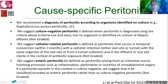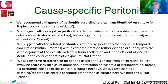The ISPD guidelines introduce two new cause-specific peritonitis definitions. Catheter-related peritonitis is defined as a peritonitis episode occurring within three months of a catheter infection (exit site or tunnel infection) where the same organism is isolated from both the catheter site and the effluent, or one culture is sterile in the context of recent antibiotic exposure. Enteric peritonitis is defined as peritonitis arising from an intestinal process — documented inflammation, perforation, or ischemia of an intra-abdominal organ.